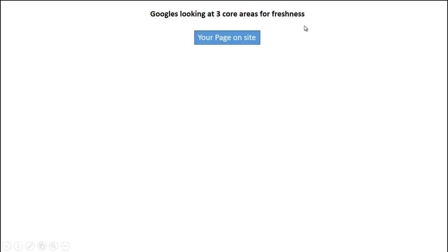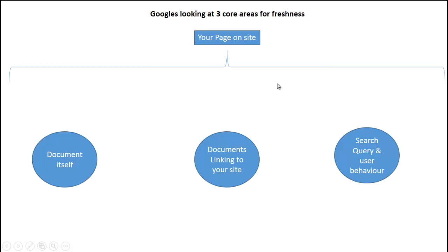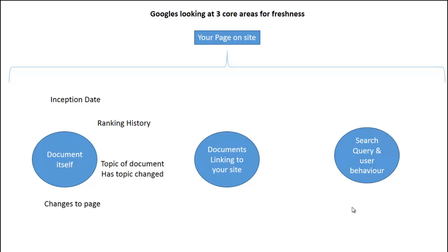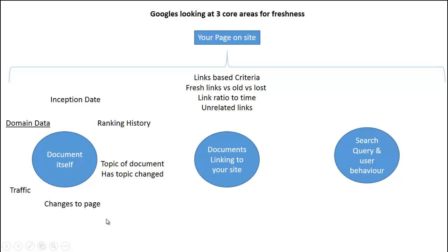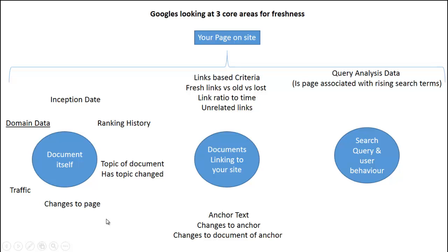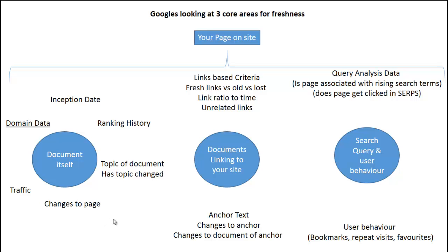I've created a diagram to illustrate this. Your page on your site is looked at from three core angles. First, the document itself: inception date, ranking history, topic, changes to the page, traffic-related areas, and the domain the document is on. Second, documents linking to your site: link-based criteria including fresh versus old versus lost links, link ratio to time, unrelated links, anchor text, changes to anchor text, and changes to the linking document. Third, the search query and user behavior: query analysis data — is the page associated with rising search terms, does the page get clicked in the SERPs, are users bookmarking it, making repeat visits, or adding it as a favorite.